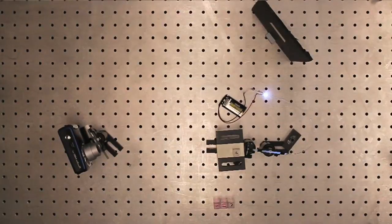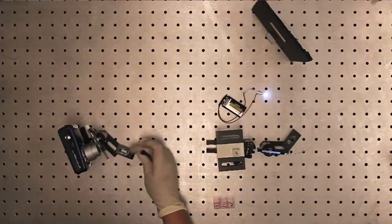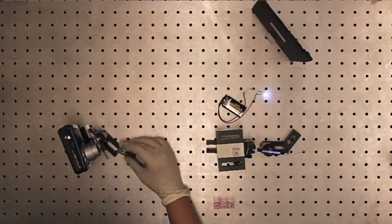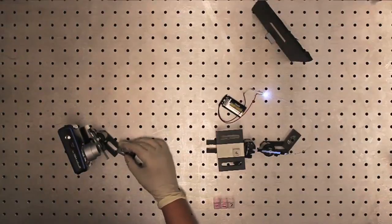Once the focus of the camera and position of all components are optimized, fix them to the table and do not move them for the rest of the experiment. The camera should see a spectrum at the image plane of the black screen.